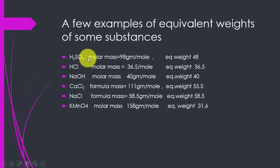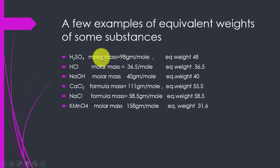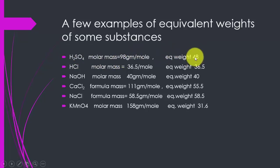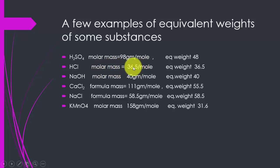In the case of acids, equivalent weight means the molar mass of the substance divided by the number of ionizable hydrogen ions. For H2SO4, we have two ionizable hydrogens, so 98 divided by 2 gives 49 grams. For HCl, there is only one ionizable hydrogen, so the molar mass equals the equivalent weight — no difference between the two.